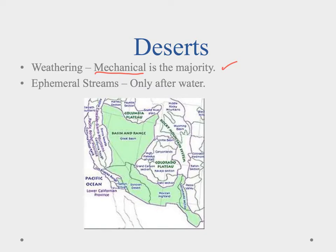We also see the rise of ephemeral streams. Ephemeral streams occur only after we get the rains. Here in the basin and range area in the Great Basin, most of our streams are washes. They're ephemeral, which means that when we get heavy rains they start to flow, and once the rains subside the water will evaporate away and we no longer have the streams.